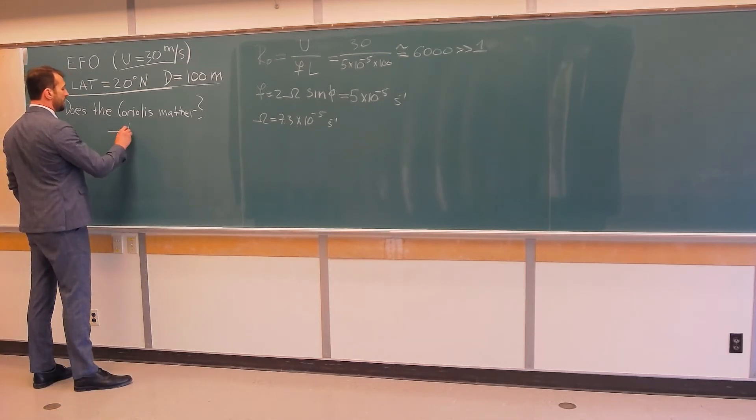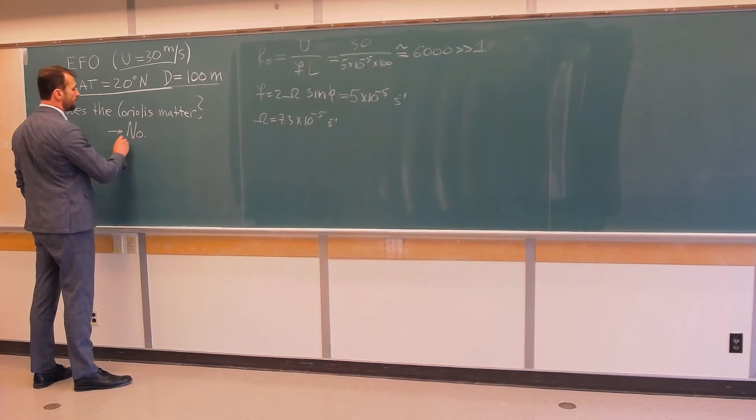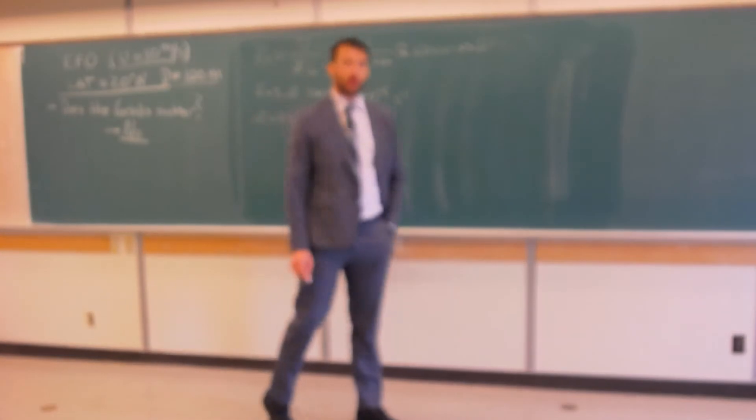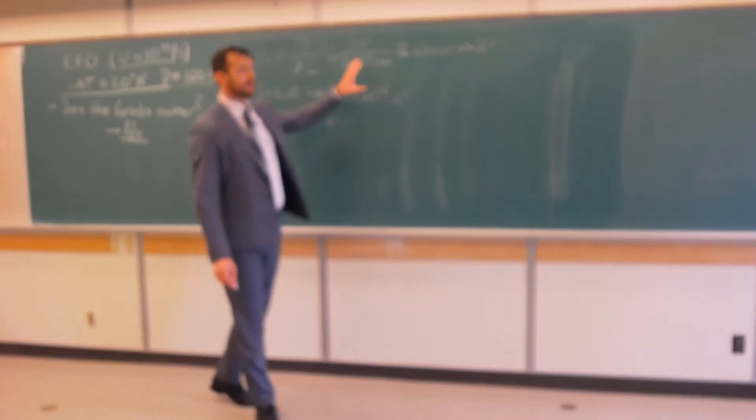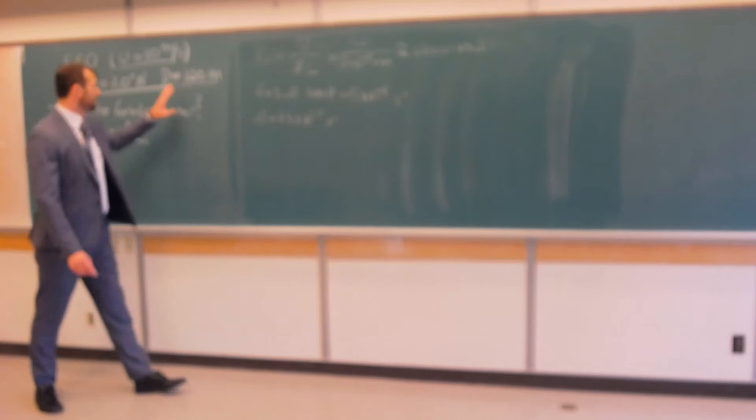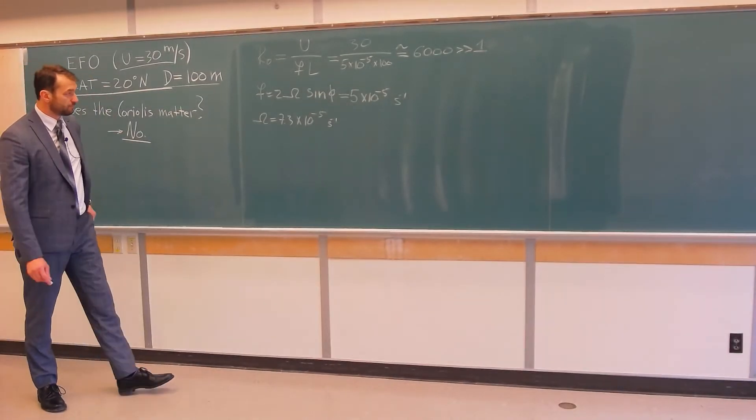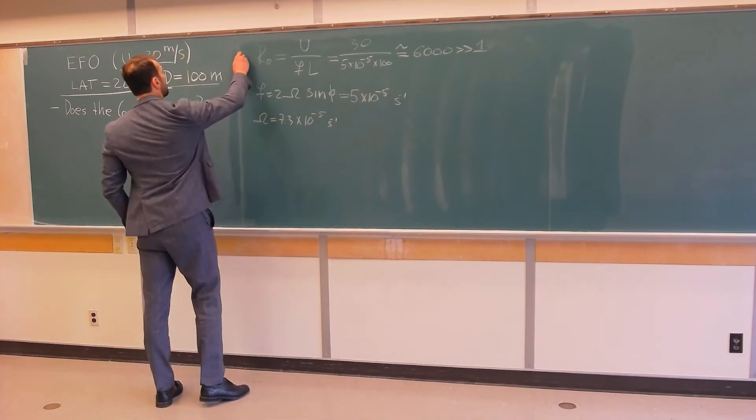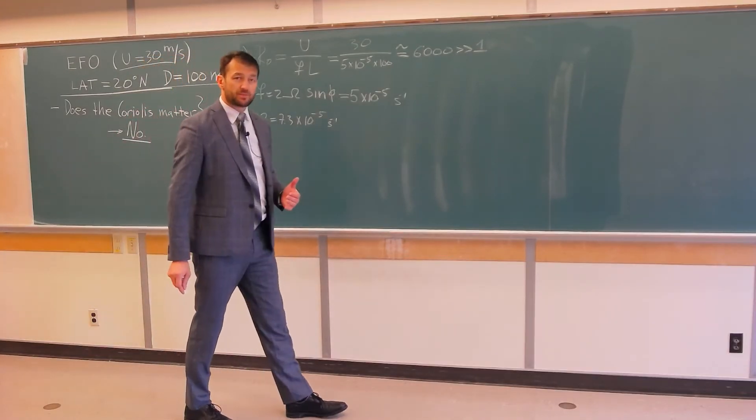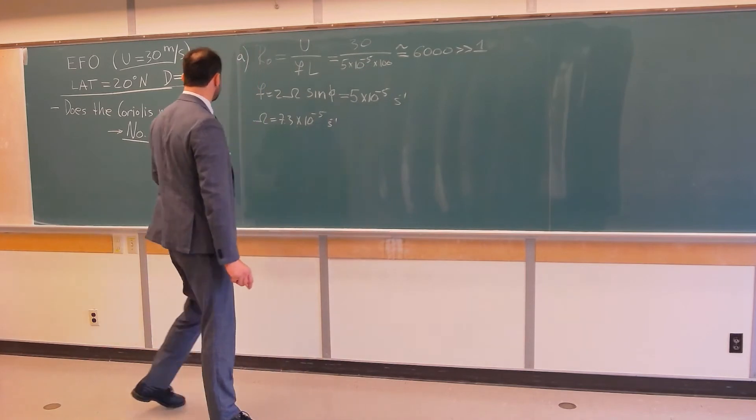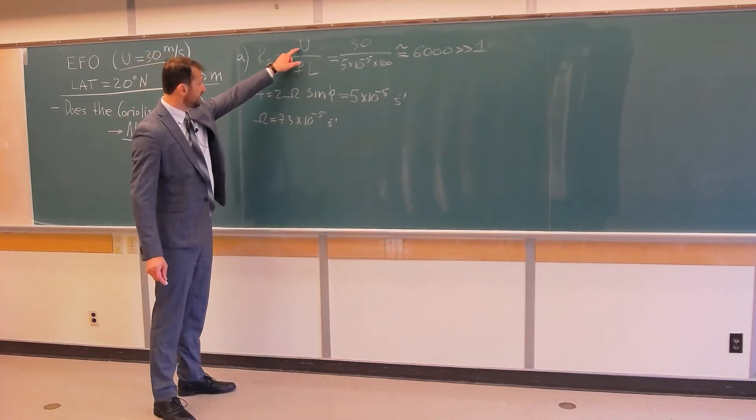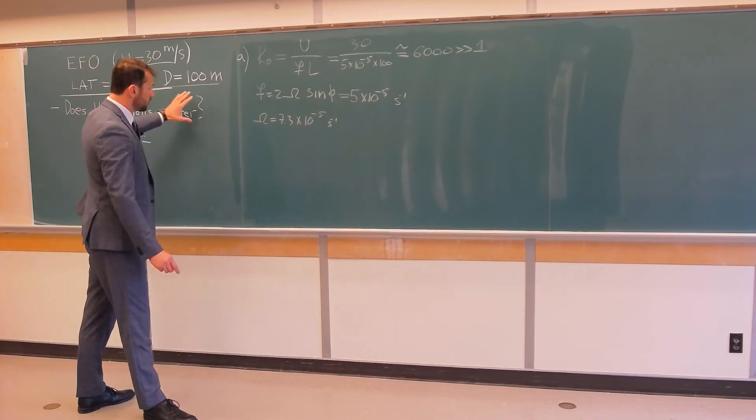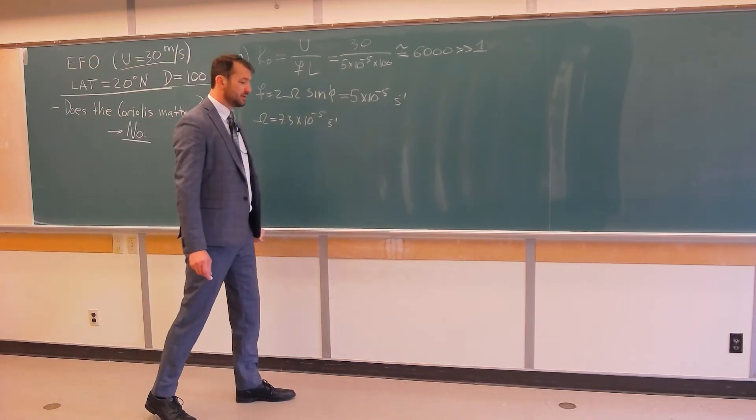So, to answer this question, the answer is no. Coriolis force does not play an important role in the dynamics and kinematics of the flow field in this weak EF0 tornado. Now, part B, that was part A. Part B of this problem says, what would have to be velocity in this tornado so that the Coriolis force matters?